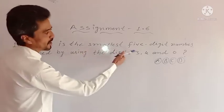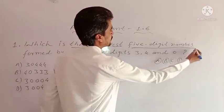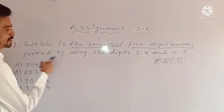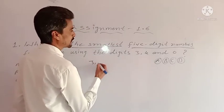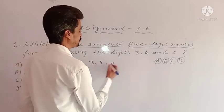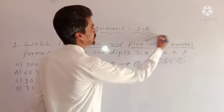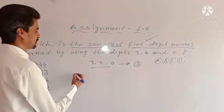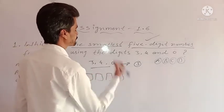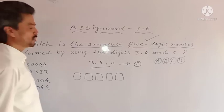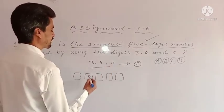Which is the smallest 5-digit number formed by using the digits 3, 4, and 0? So what digits we have here? 3, 4, and 0. Total digits are 3 and we need to find out the 5-digit number, so I am drawing 5 boxes. In our basic knowledge, 0 should be on the second place.